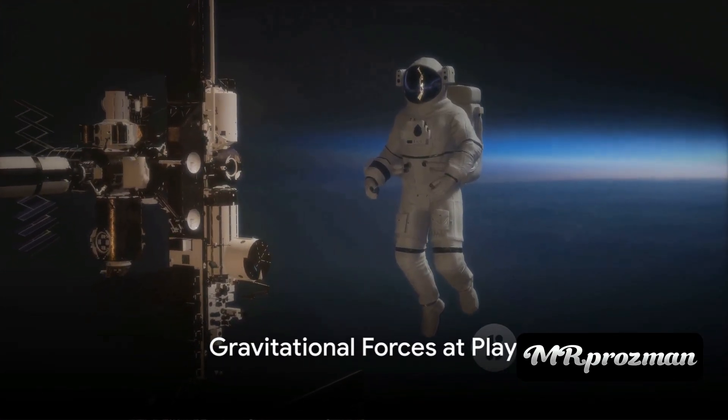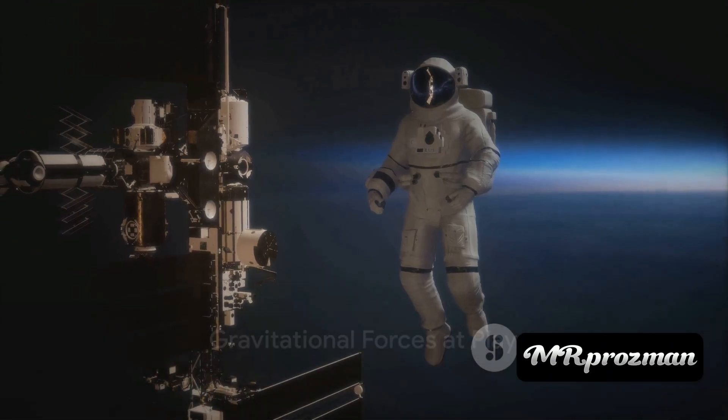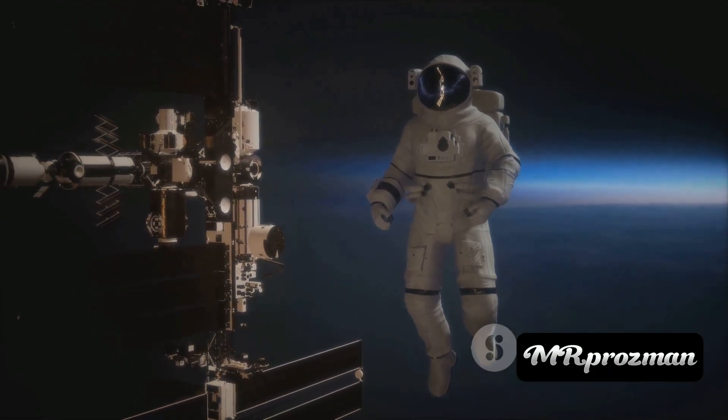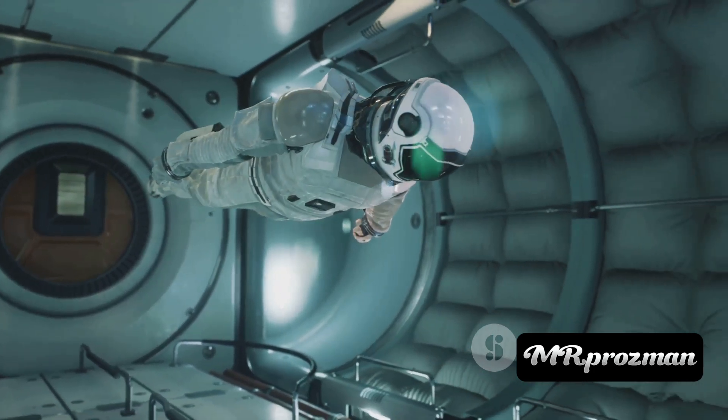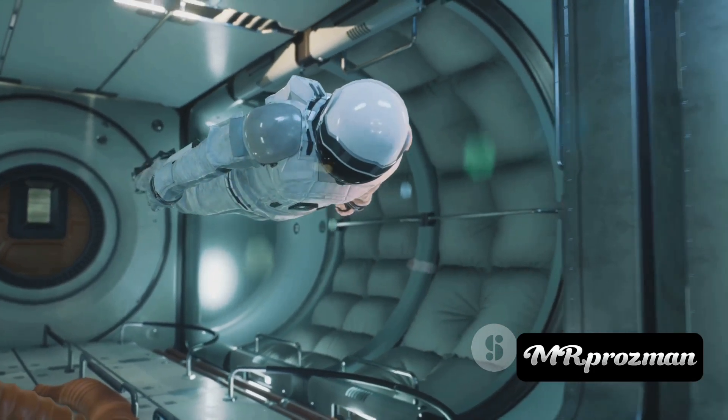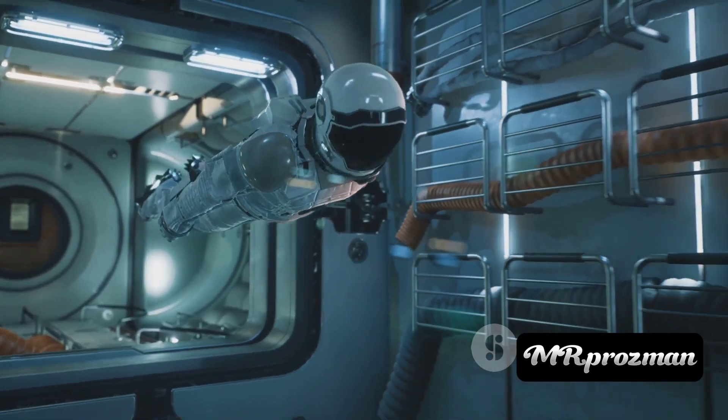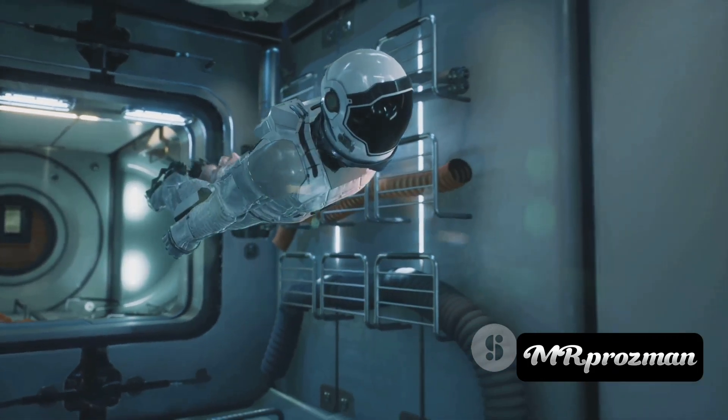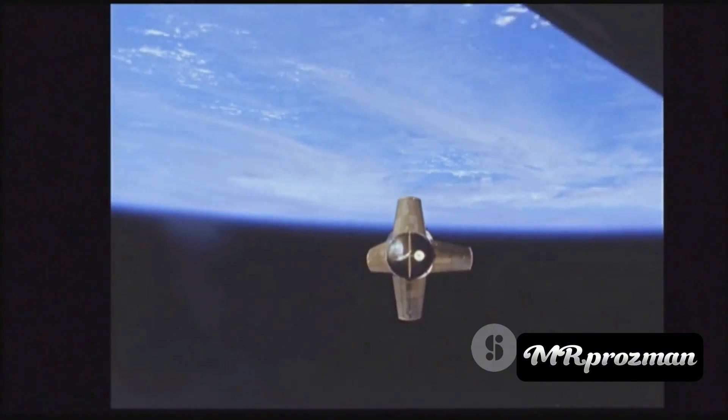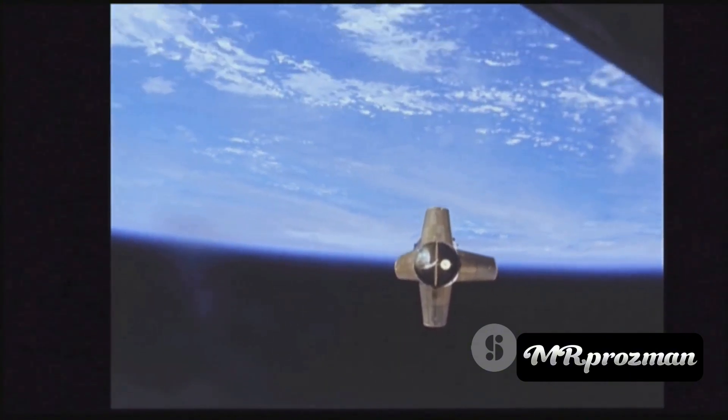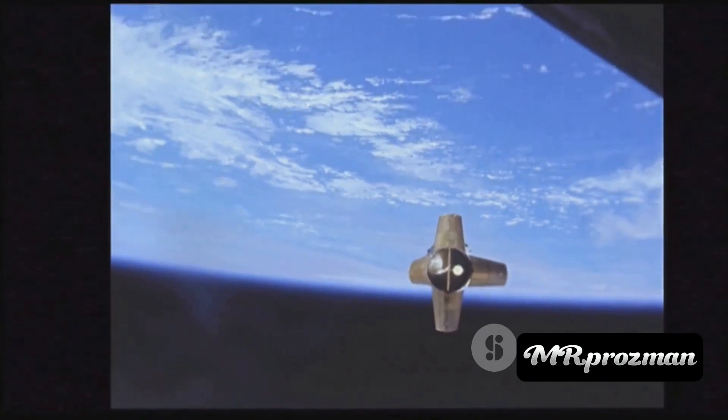Next let's consider the role of gravity in this equation. Gravity is that invisible force that keeps us grounded, quite literally. It pulls everything towards the center of the earth. Now imagine our needle in space. The absence of an atmosphere means there's minimal air resistance, but gravity is still in play. In space gravity isn't as strong as on earth, but it's still there, subtly beckoning the needle towards the earth.